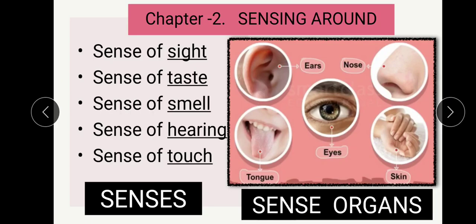Hello children! We have been learning about the five senses and five sense organs. We are learning Chapter 2: Sensing Around. You can see the senses on one side and the sense organs on the other side in the picture. The senses are: sense of sight, sense of taste, sense of smell, sense of hearing, and sense of touch. These are called senses.